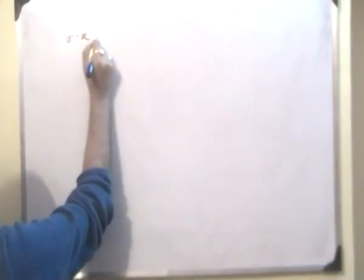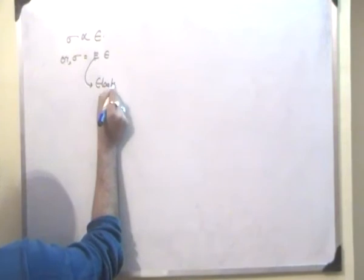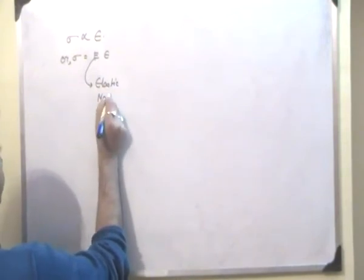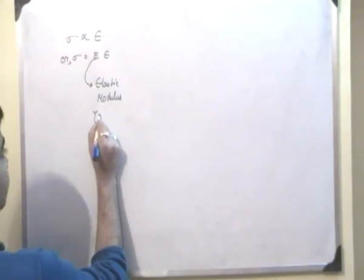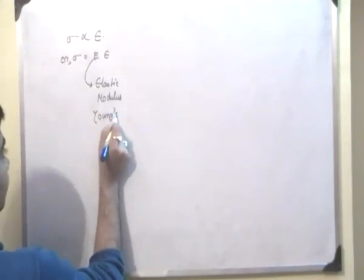Now we have normal stress. If it's directly proportional to normal strain then we have sigma to be equal to E epsilon. Now this E is called the elastic modulus or Young's modulus.